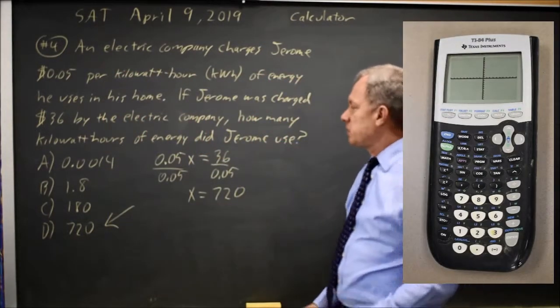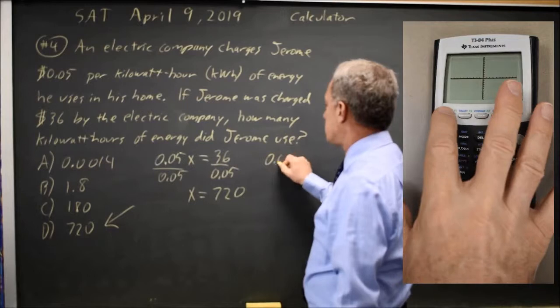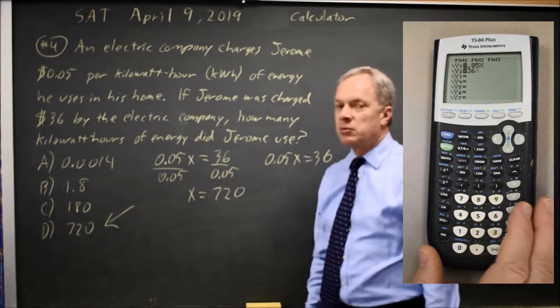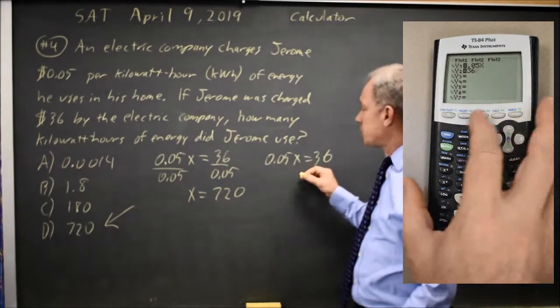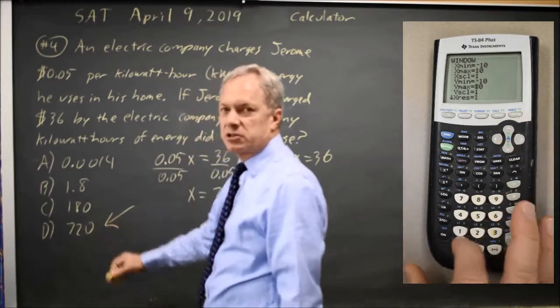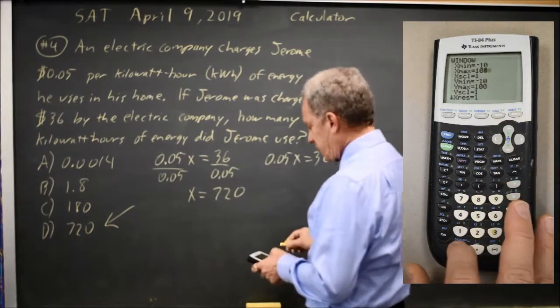If you're uneasy about that you can just put 0.05x equals 36 into your calculator, make y max bigger than 36, I used 100, make x max bigger than the largest answer choice, I used 1000. And if I graph that,